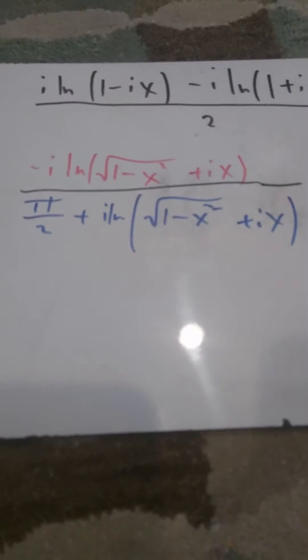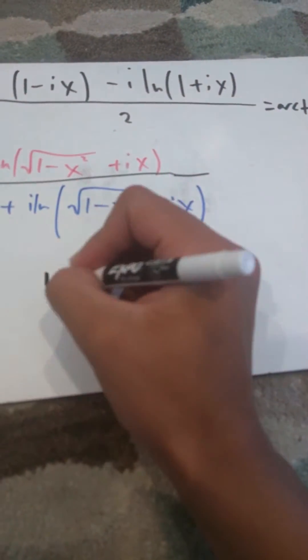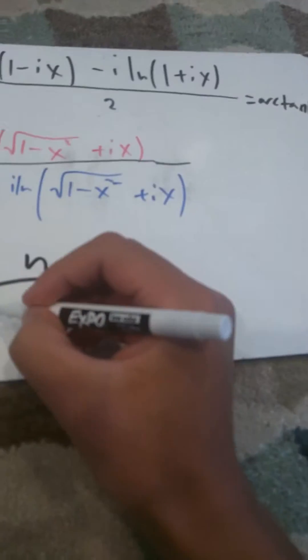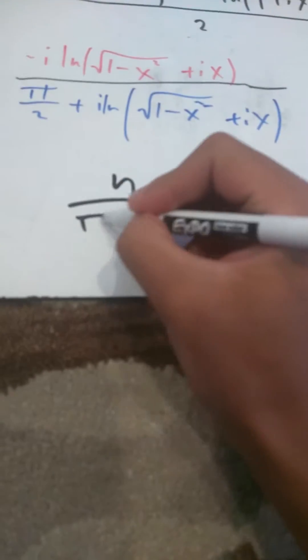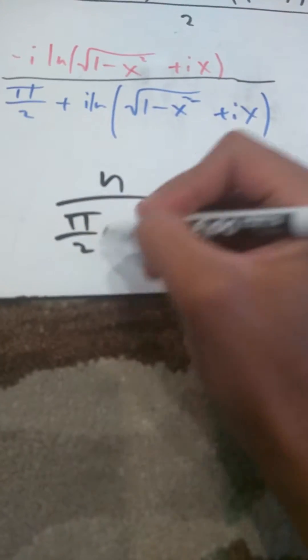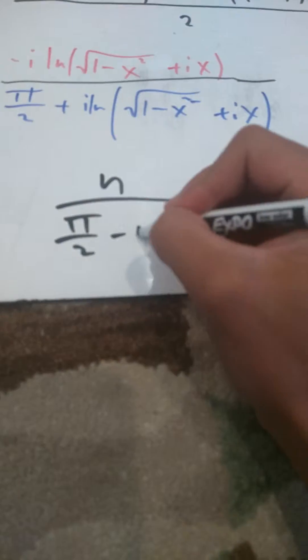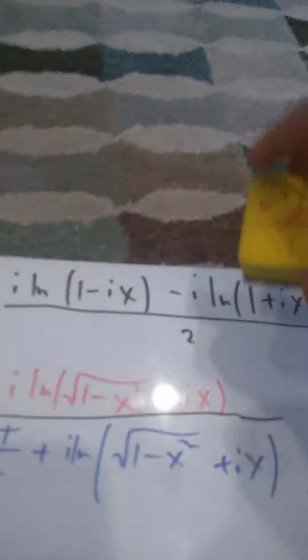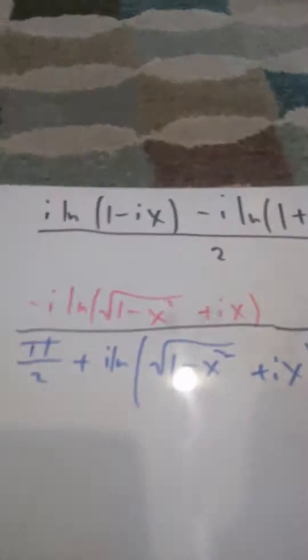If you do the division, it's just like n over pi over 2 minus n. So now you can plug in the values.